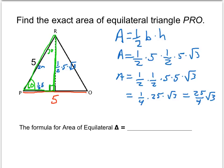And so we see 25 is 5 squared. And so the area formula for any equilateral triangle is 1 fourth times the side length, squared, times the square root of 3.